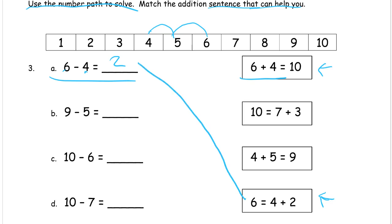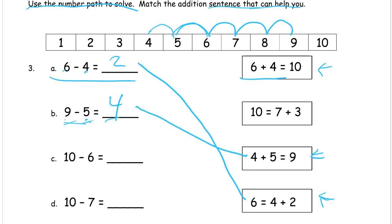Now that you've seen one, you can pause the video and try to figure out the rest yourself, then come back and check. If you need another example, keep watching. Nine minus five: start at the five, we want to see how far apart nine and five are. It's easier to count up than to count backwards, so let's start at the five and count up to the nine: one, two, three, four — they're four apart. So which addition sentence goes with the five, four, and nine? This one has the five and the four added together to make the nine — we started with four and went up five more, so four plus five equals nine.